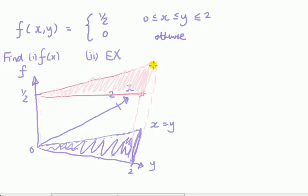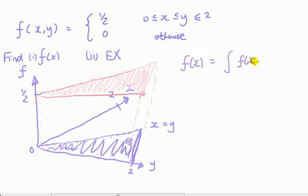So I want to find f(x), but I'm only given information about the joint distribution. The marginal for x may be obtained from the joint by integrating out with respect to y.